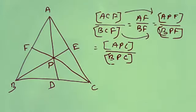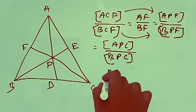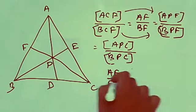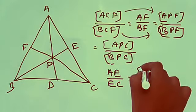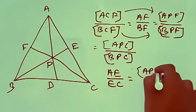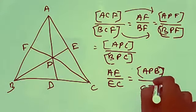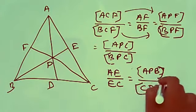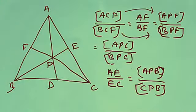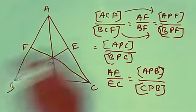Likewise, we can prove that AE/EC is equal to area(APB) divided by area(CPB), or area(BPC). So AE/EC is equal to area(APB) divided by area(BPC). This is equation one, and the previous result is equation two.